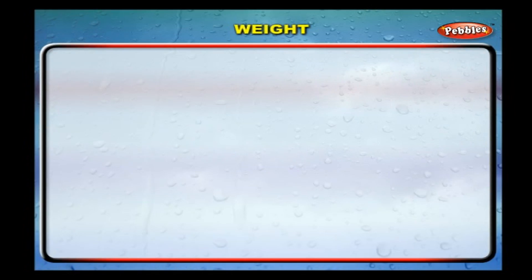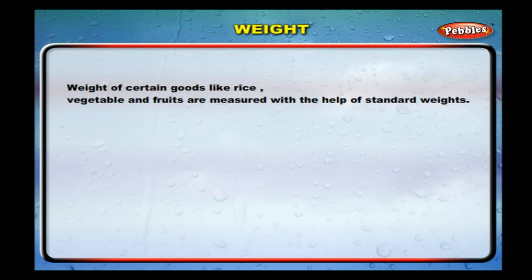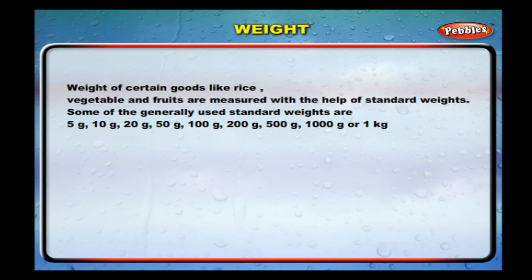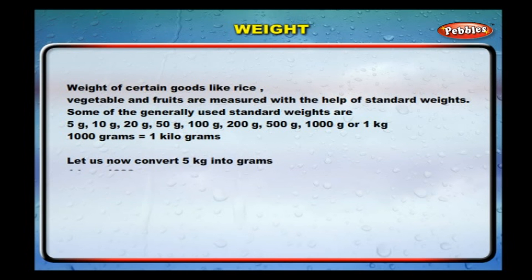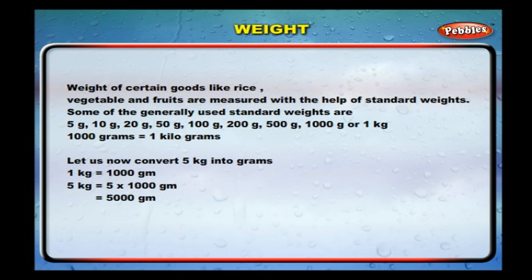Weight: the weight of certain goods like rice, vegetables, and fruits are measured with the help of standard weights. Some generally used standard weights are 5 g, 10 g, 20 g, 50 g, 100 g, 200 g, 500 g, and 1000 grams or 1 kilogram. Conversion: 1 kilogram is equal to 1000 grams, so 5 kilograms equals 5000 grams.